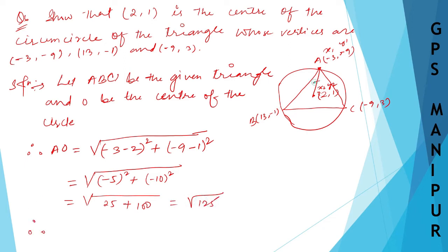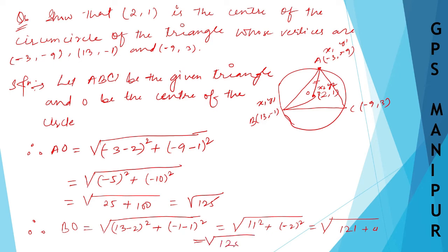We have found out AO, now let us find out BO. BO equals √[(13−2)² + (−1−1)²] = √[11² + (−2)²] = √[121 + 4] = √125.